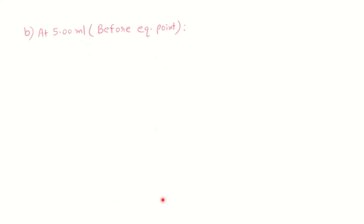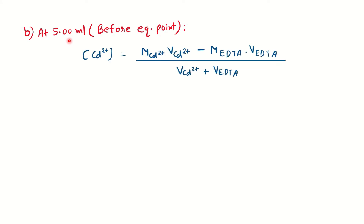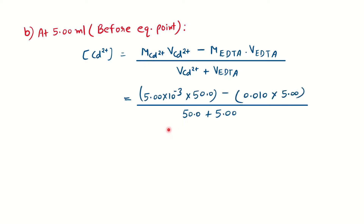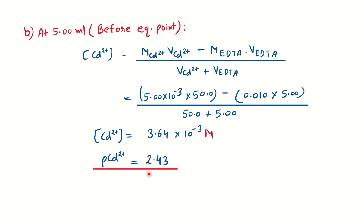Before the equivalence point (at 5 ml of EDTA added), there is excess Cd²⁺ compared to EDTA. We calculate [Cd²⁺] = (millimoles of metal − millimoles of titrant) / total volume. Substituting the values for 5 ml of EDTA gives us the concentration of cadmium, and applying −log of that concentration gives p(Cd) = 2.43 before equivalence point.